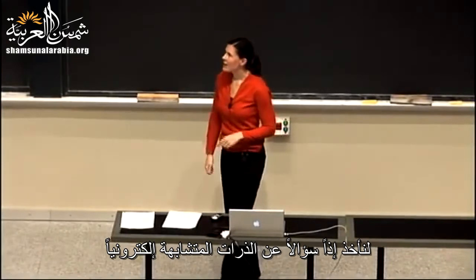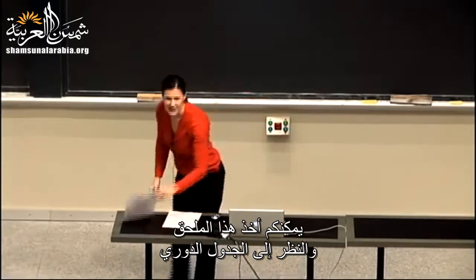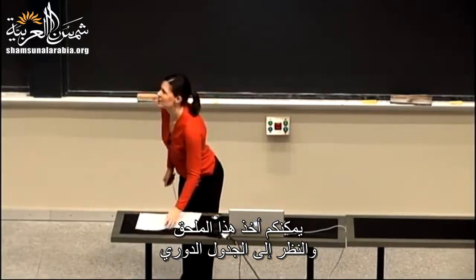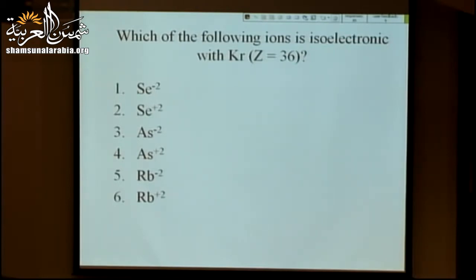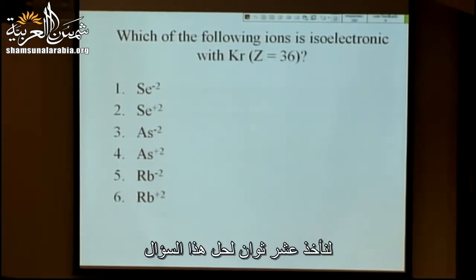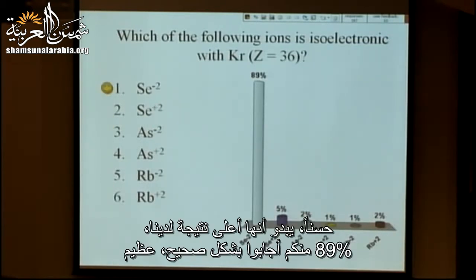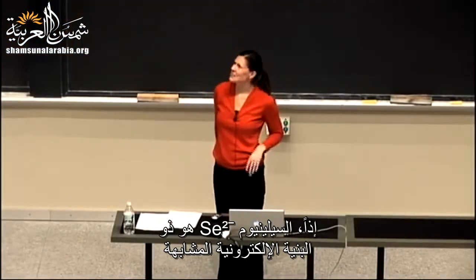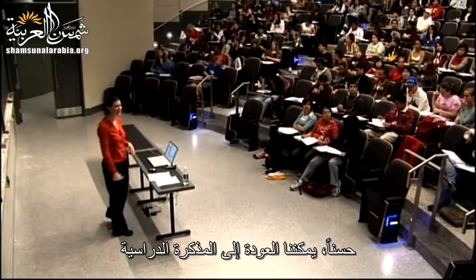Let's do a clicker question on isoelectronic atoms. Krypton has atomic number 36. Which of the following ions is isoelectronic with krypton? Selenium 2⁻ is correct — adding two electrons to selenium gives the same electron configuration as krypton. Eighty-nine percent got this right — our all-time high.